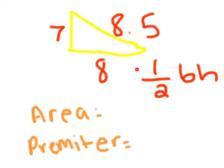So it would be one half times 8 times 7. You're going to do one half times 8 times 7, and you come to an answer of 7.5. And now you're going to find the perimeter,